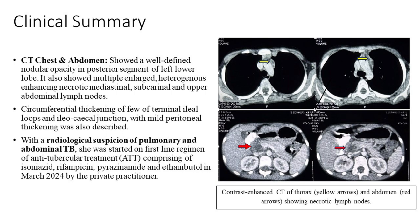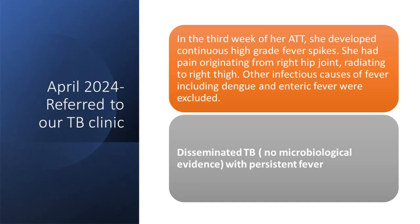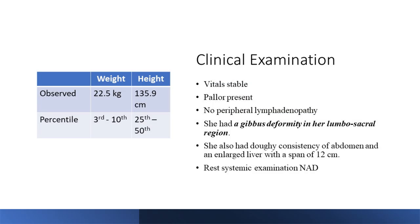They started her on HRZE in March. By April, after a month on ATT, her fever continued and she developed pain in the right hip radiating to the right thigh. She was referred to us with a diagnosis of probable disseminated TB without microbiological evidence. On examination, her weight and height were okay, but she had a gibbus in the lumbosacral region and a doughy feel of the abdomen.